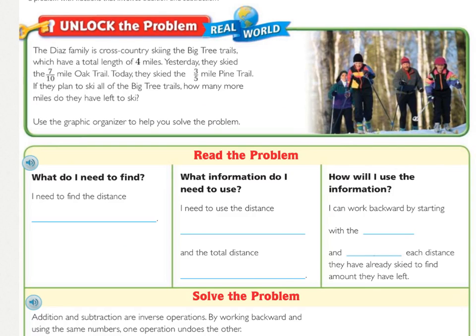Unlock the problem. The Dyas family is cross-country skiing the Big Tree trails, which have a total length of 4 miles. Yesterday they skied the 7/10 mile Oak Trail. Today they skied the 3/5 mile Pine Trail. If they plan to ski all of the Big Tree trails, how many more miles do they have left to ski? You should have underlined 'how many more miles do they have left to ski' and circled 'total length of 4 miles,' '7 tenths,' and '3 fifths.'